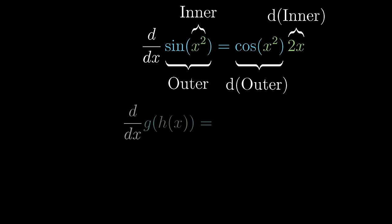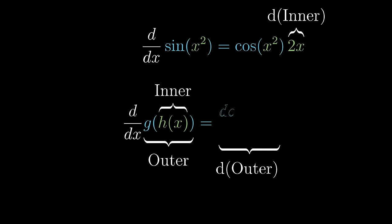Again, there is nothing special about sine of x or x squared. If you have any two functions g of x and h of x, the derivative of their composition, g of h of x, is going to be the derivative of g evaluated on h, multiplied by the derivative of h.